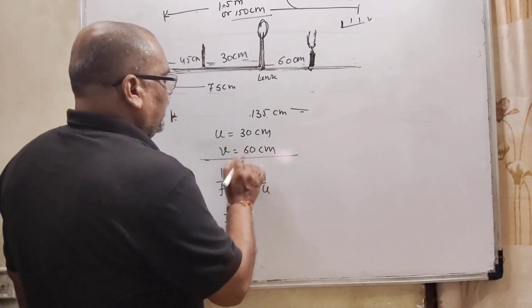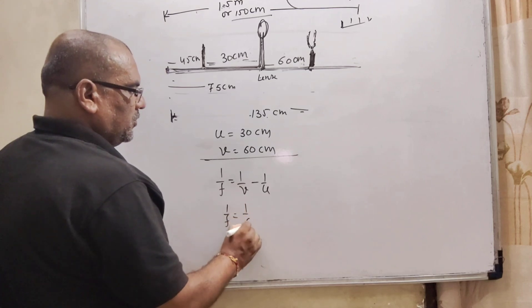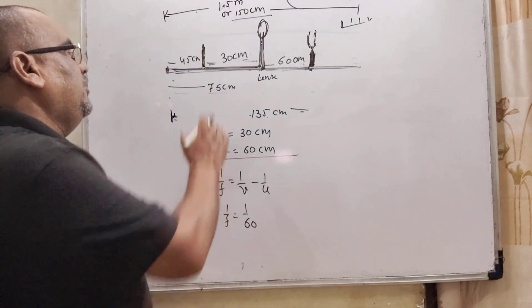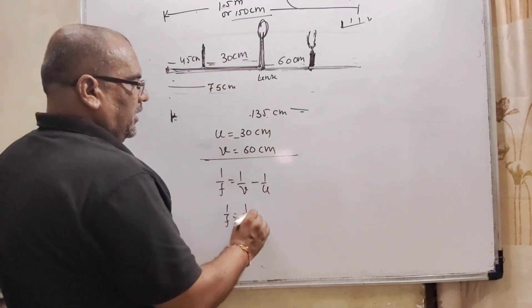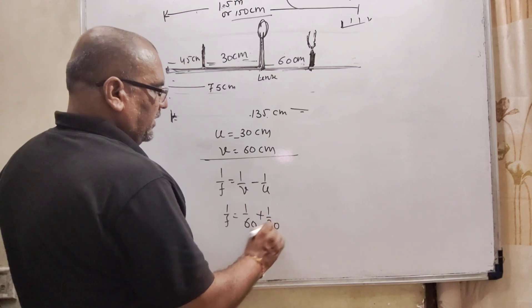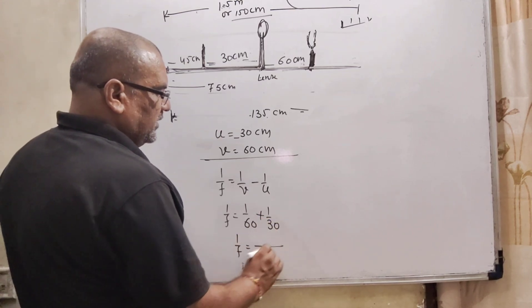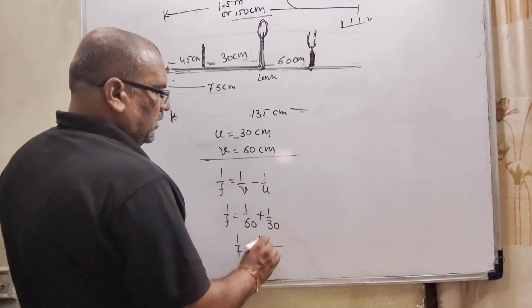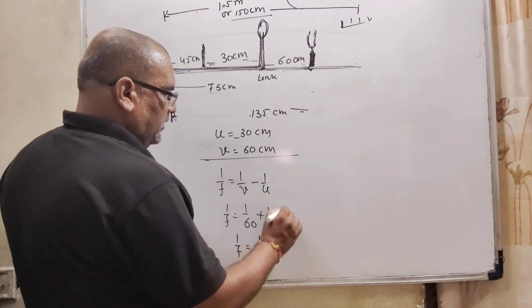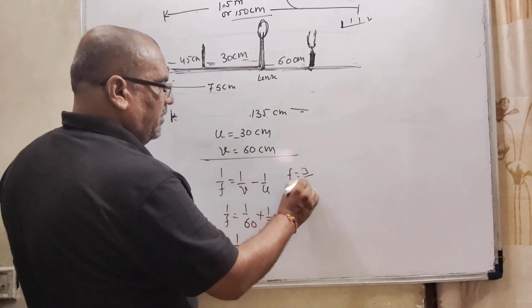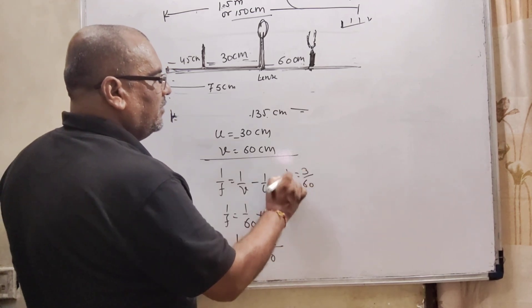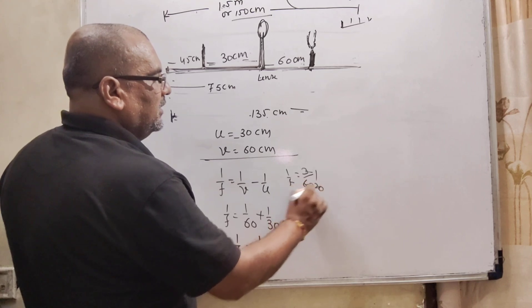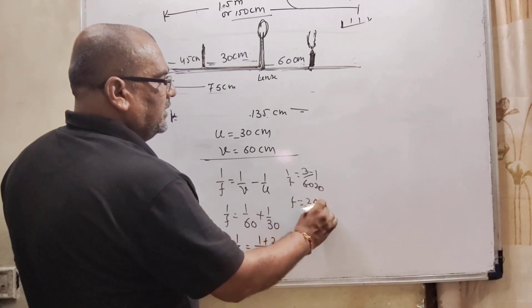Here, v is positive side, so plus 60. And u is negative, then minus minus plus 1 by 30. Taking the LCM, 30 to the 60. Then f equal to 3 by 60. 1 upon f equal to 3 by 60. Then f equal to 20 centimeter.